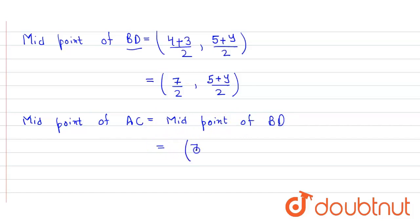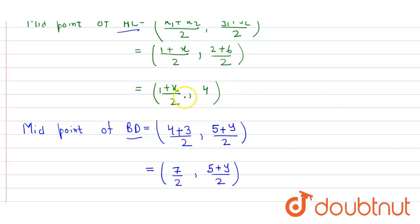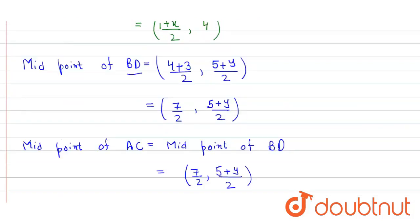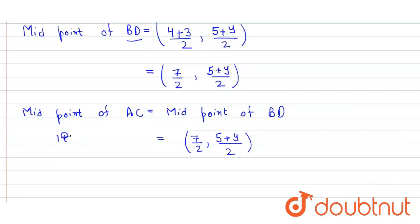So the midpoint of BD is 7 upon 2 and 5 plus y by 2, and the midpoint of AC is 1 plus x divided by 2 and 4. So now we compare them.